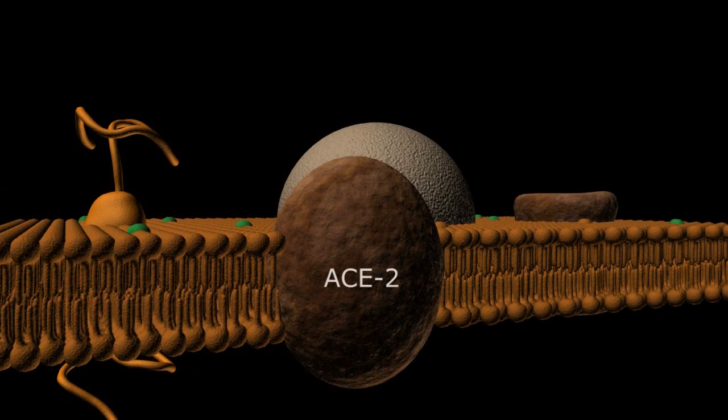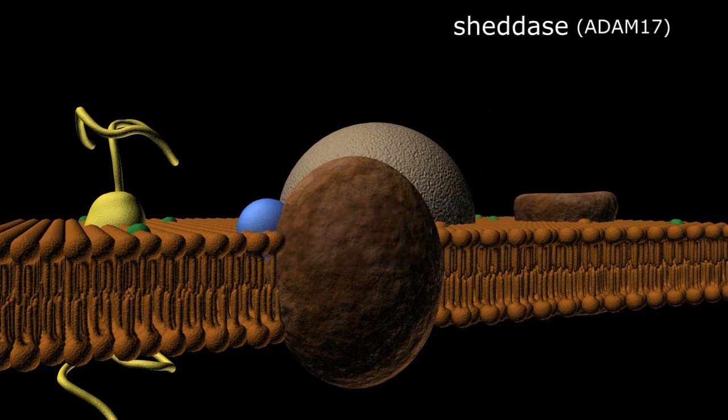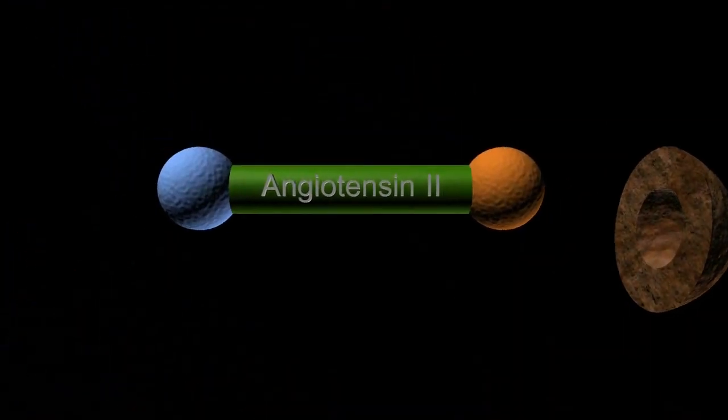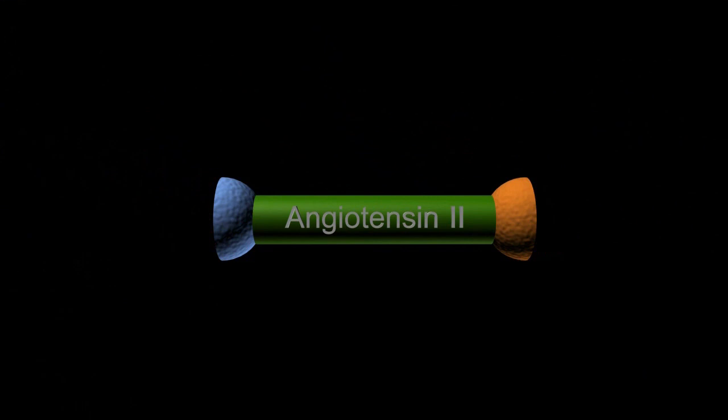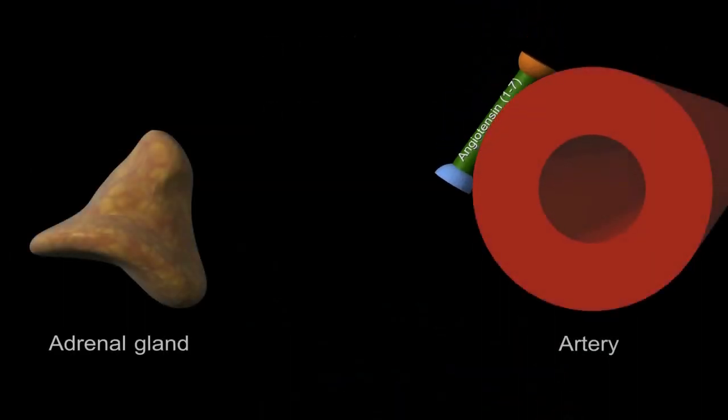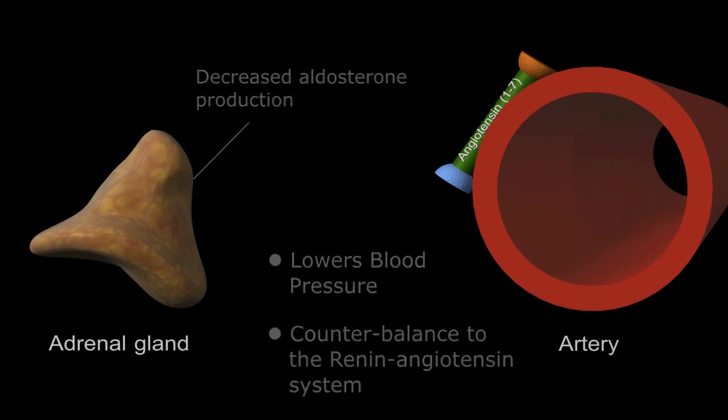Looking back at our ACE2 surface protein, the active form of ACE2 is produced by an additional enzyme called shedase. Shedase cleaves the external component of the ACE2 protein and releases it into the bloodstream. The cleaved ACE2 then interacts with angiotensin-2, converting it into angiotensin-1-7. Angiotensin-1-7 is a powerful antioxidant and vasodilator. Dilating the peripheral vessels of the body and eliminating the action of angiotensin-2 on the adrenals, angiotensin-1-7 lowers blood pressure and is basically the counterbalance to the renin-angiotensin system.